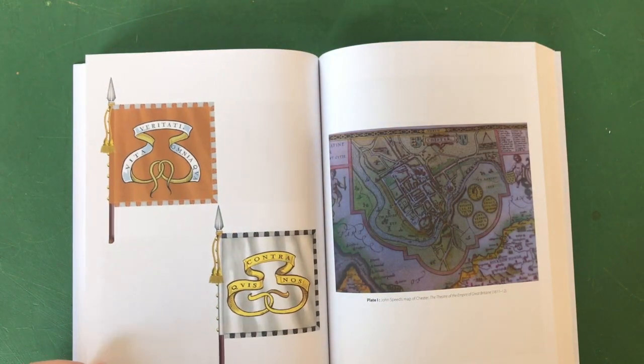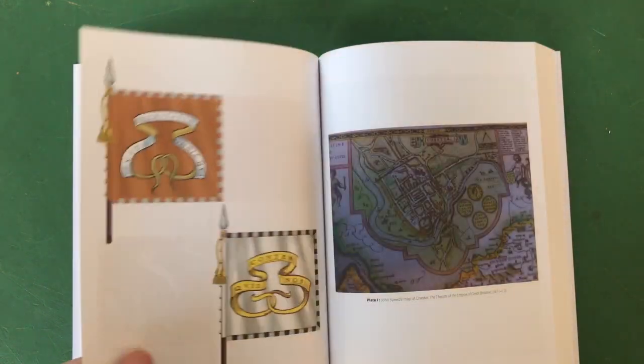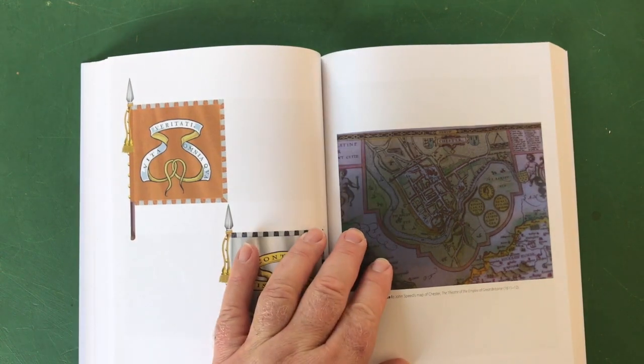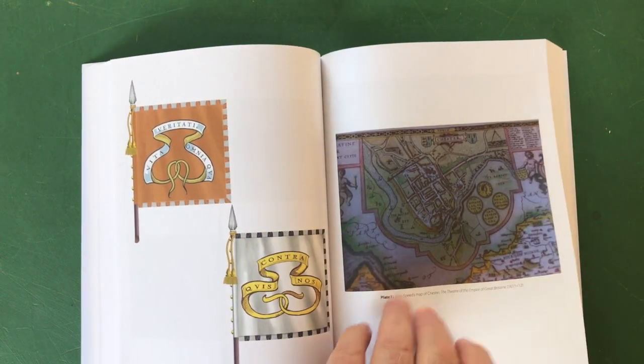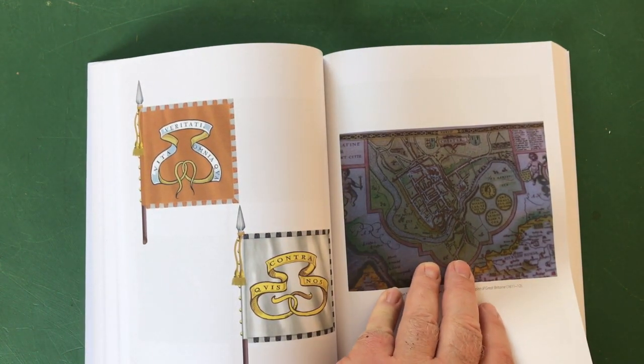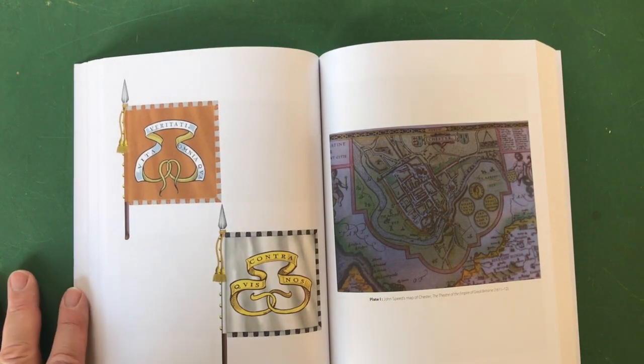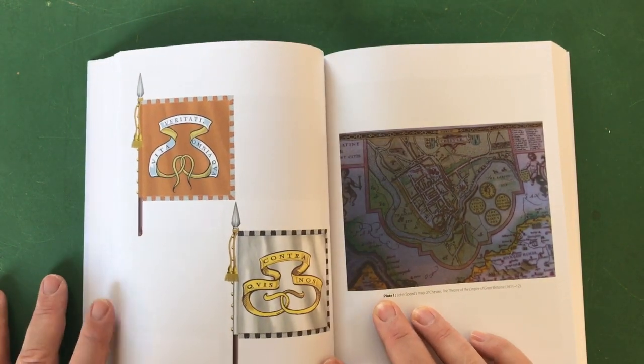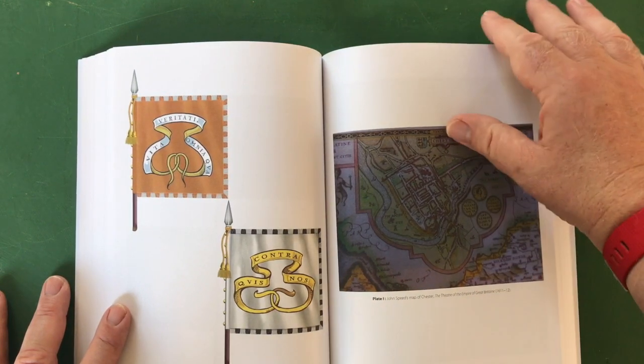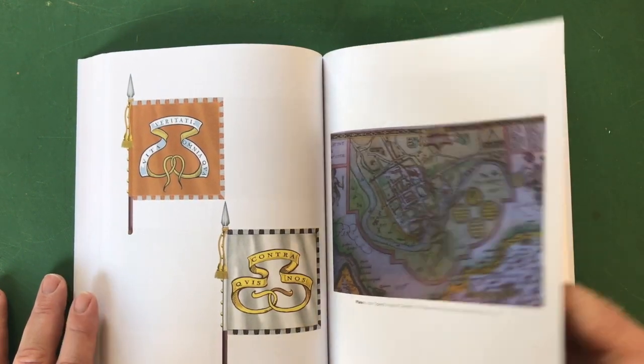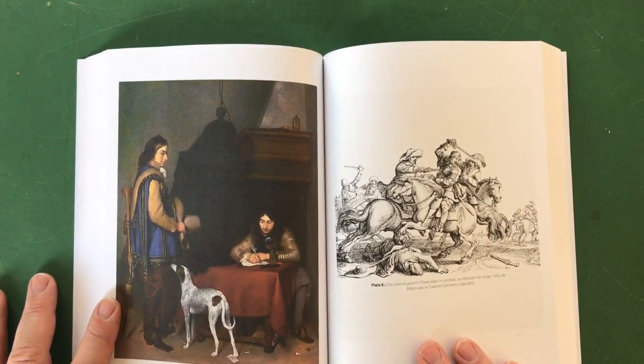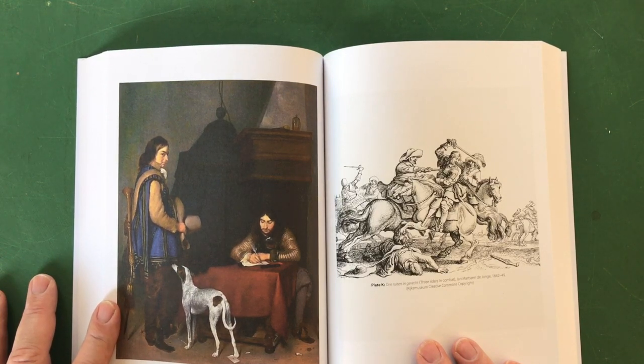Fabulous. John Speed's map of Chester - contemporary map of Chester. It's a bit dull as a reproduction, I think that could have done with a bit more work in Photoshop to brighten it up, but nonetheless it's a useful thing.